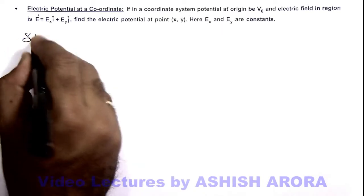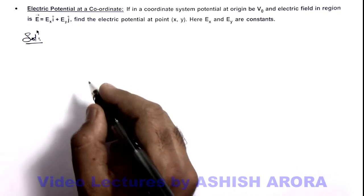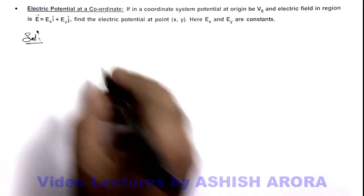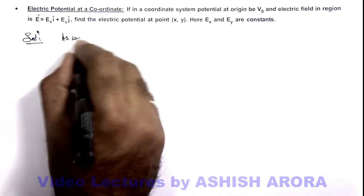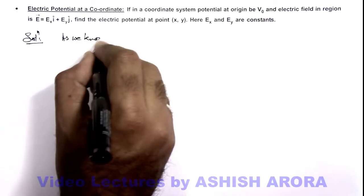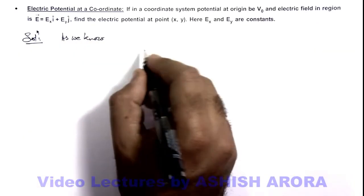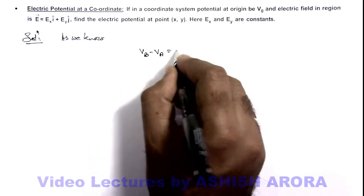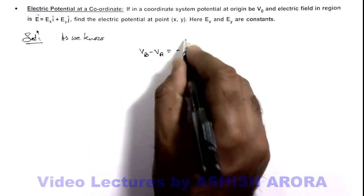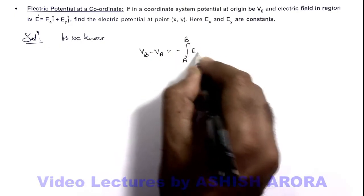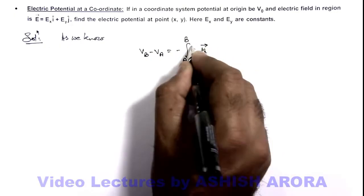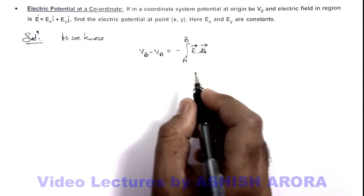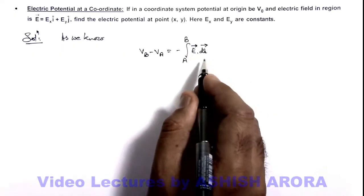So here we can analyze the basic expression for potential difference. As we know, the value of potential difference between two points VB minus VA is given by negative of integration from A to B of E dot dr, where E is the vector form of electric field and dr is the displacement of the particle.